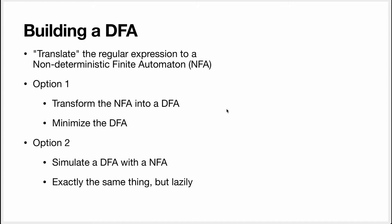So how do we go about actually building a DFA? Well the first step is to actually build a NFA which is a non-deterministic finite automata. Then we transform the NFA into a DFA. We can actually reduce the size of that DFA. The other option is exactly the same thing but instead of doing that before running we actually simulate the DFA using an NFA. So this asks more questions than answers.